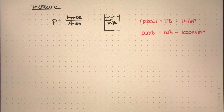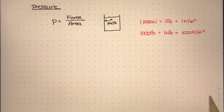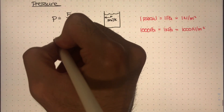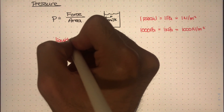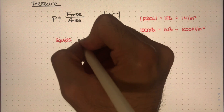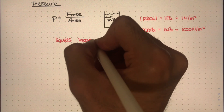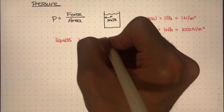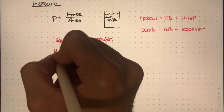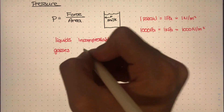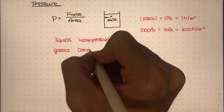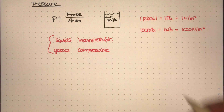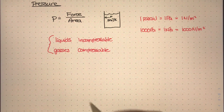So how does this relate to fluids? From our previous discussions, we know that liquids are incompressible fluids and gases are compressible fluids. These are the two types of fluids we've studied, but how do we actually measure the pressure from these types of fluids?